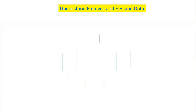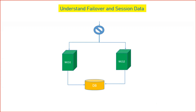If some user accesses any application deployed in WebLogic server, in the back end you may have multiple applications running for high availability. The user request comes from the web browser and gets connected to one of the managed servers. As you can see on screen, there are two instances of WebLogic server running — WLS1 and WLS2. If a user tries to access any application, they will get connected with either WLS1 or WLS2 based on load balancer configurations. Till a user is working on that particular session, it stays connected with that same managed server.